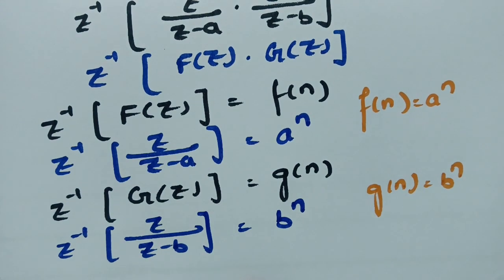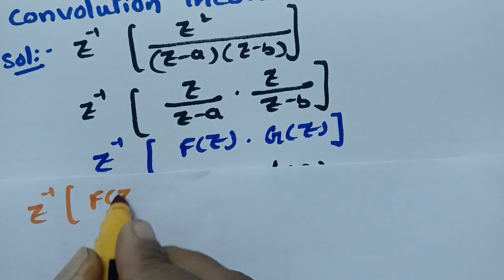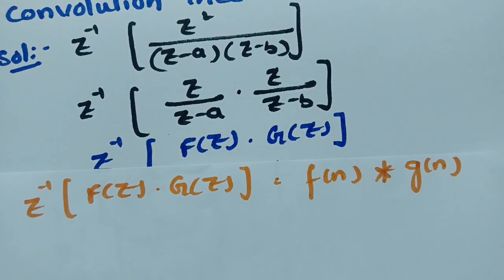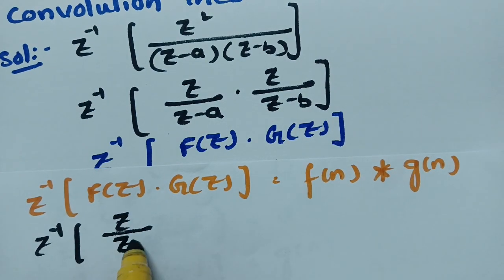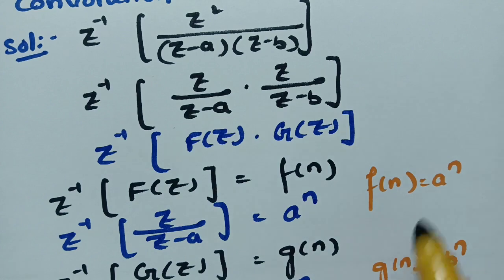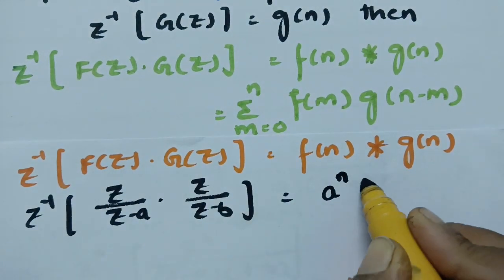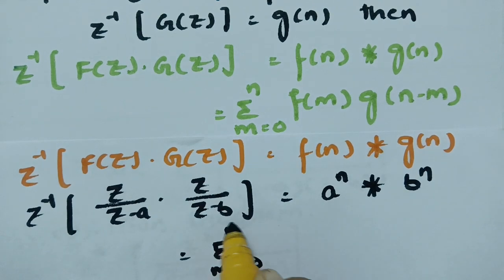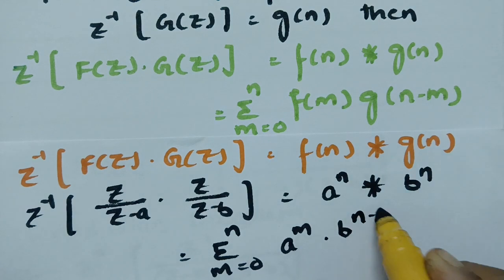We use the convolution theorem. According to the convolution theorem, Z inverse of F of Z into G of Z is F of n star G of n. Substituting: Z inverse of Z by (Z minus A) into Z by (Z minus B) equals A power n convolved with B power n. According to the convolution formula, this equals sigma m equals 0 to n, F of m — writing A power m — into G of n minus m, which is B power n minus m.